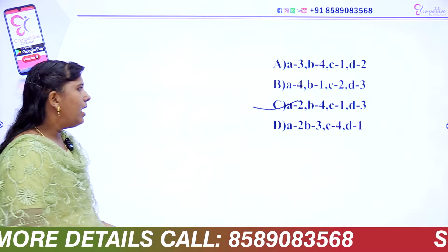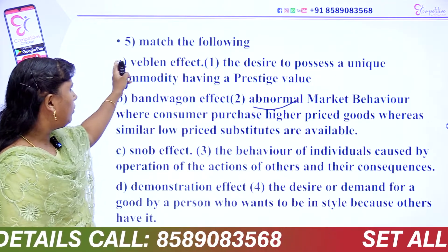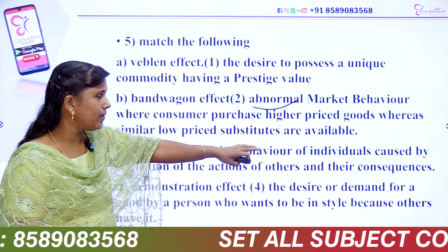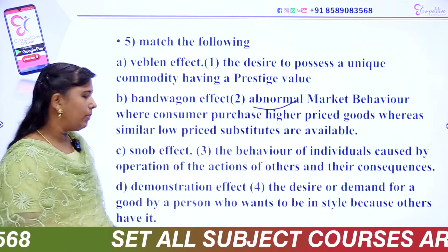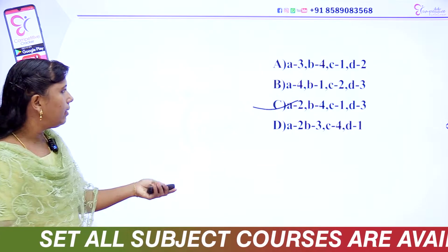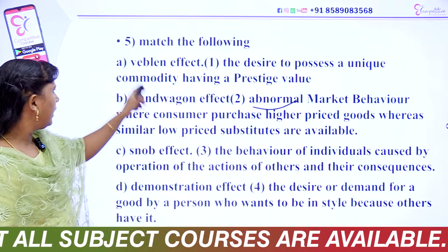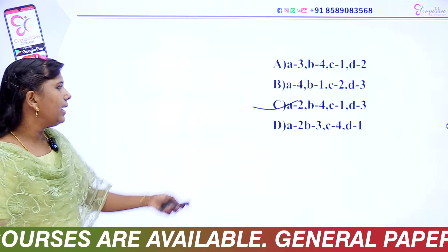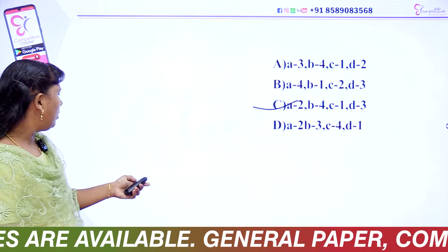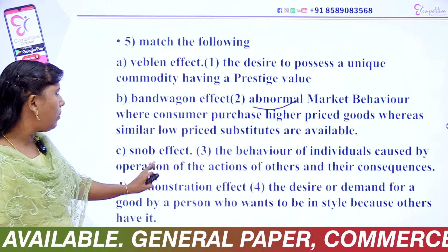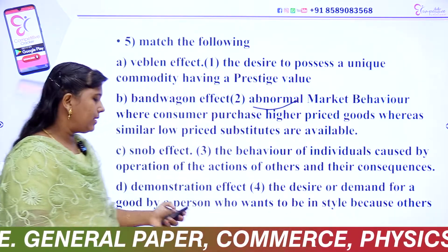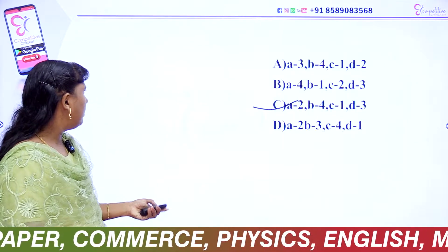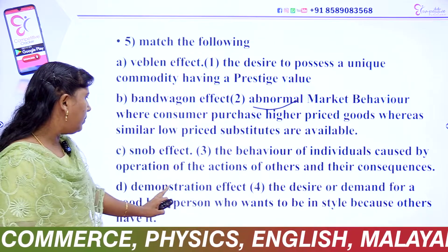The answer is: Option C - A2 is the Veblen effect. Abnormal market behavior where consumers purchase higher-price goods whereas similar low-price substitutes are available is B4, the Bandwagon effect. C1 is the Snob effect — unique good, prestigious good.